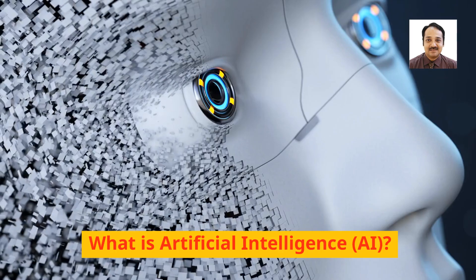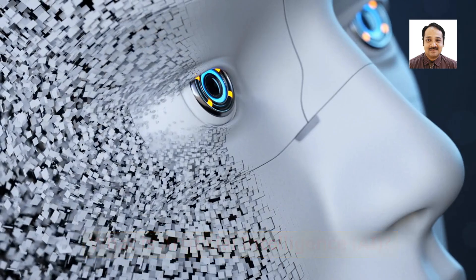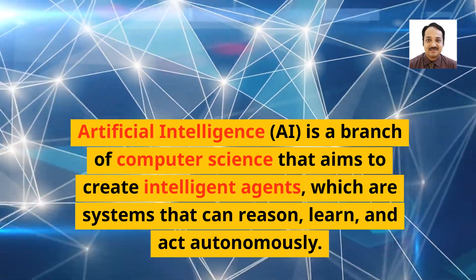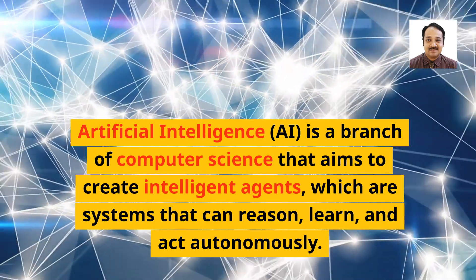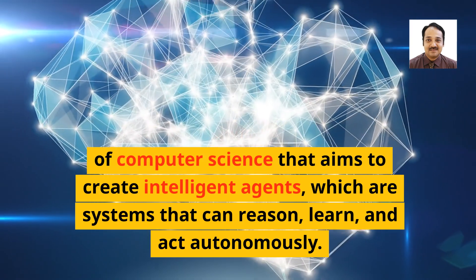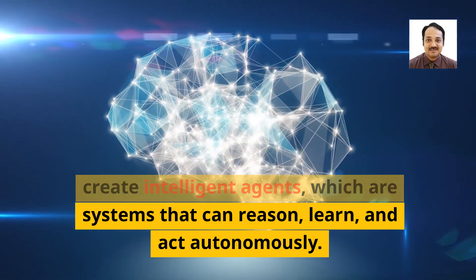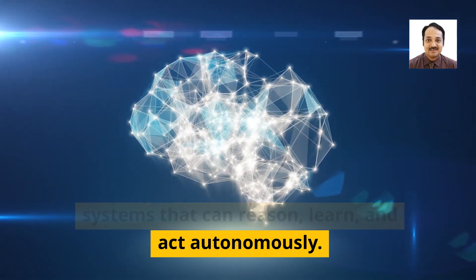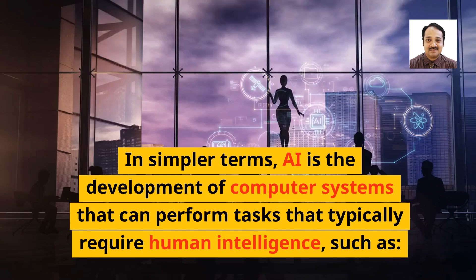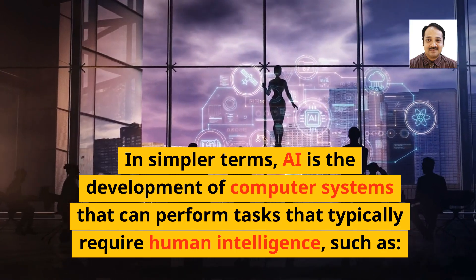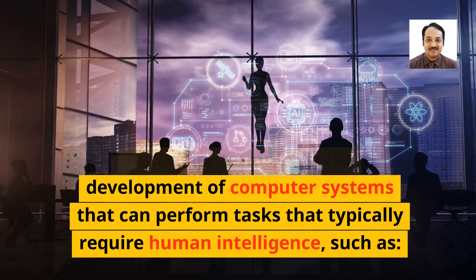What is artificial intelligence? Artificial intelligence, or AI, is a branch of computer science that aims to create intelligent agents — systems that can reason, learn, and act autonomously. In simpler terms, AI is the development of computer systems that can perform tasks that typically require human intelligence.